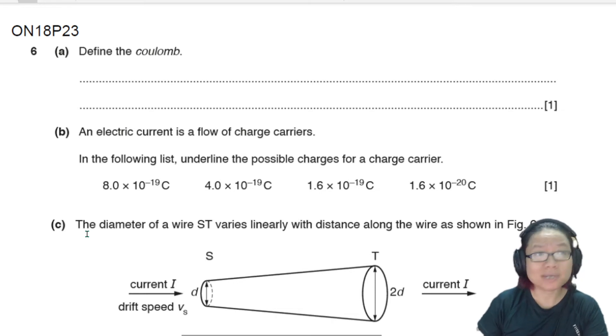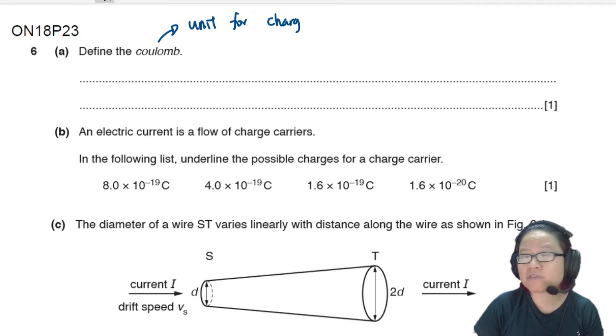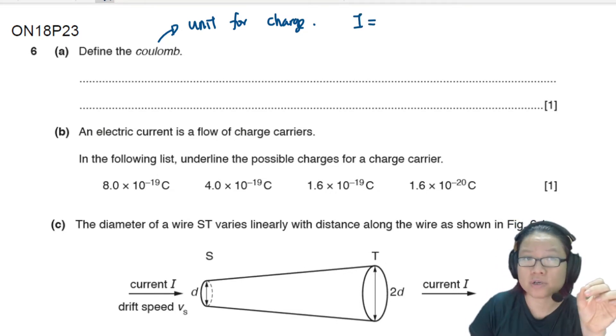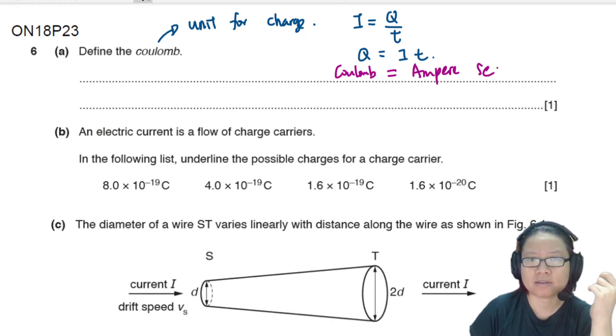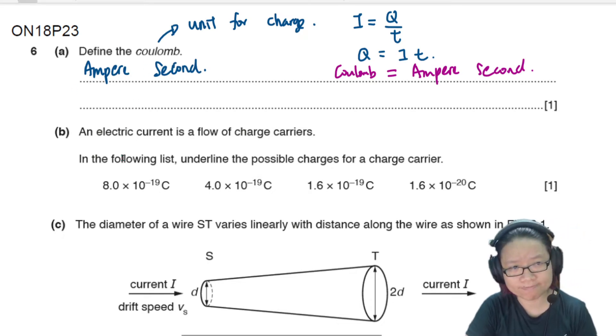Define the Coulomb. So the Coulomb here is a unit. We use units to define units. Let's think of Coulomb here as the unit for charge. So relevant to this question, do you have an equation that involves charge? Yes, the equation that we learned here is current is charge per unit time. So from here, I get Q is equal to IT. So the unit for Q, which is Coulomb, is equal to Ampere second. That's my answer. Ampere second. One mark. But spell it out, don't write the symbol.